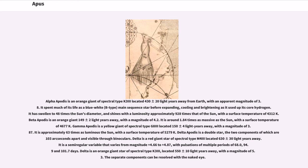Delta Apodis is a double star, the two components of which are 103 arcseconds apart and visible through binoculars. Delta 1 is a red giant star of spectral type M4 III located 630 plus or minus 30 light-years away. It is a semi-regular variable that varies from magnitude plus 4.66 to plus 4.87, with pulsations of multiple periods of 68.0, 94.9 and 101.7 days. Delta 2 is an orange giant star of spectral type K3 III, located 550 plus or minus 10 light-years away, with a magnitude of 5.3. The separate components can be resolved with the naked eye.